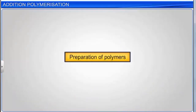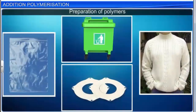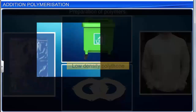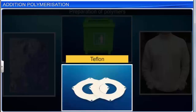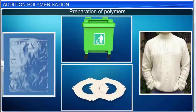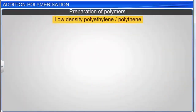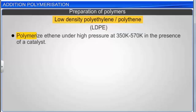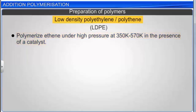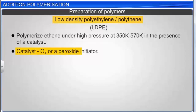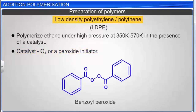Some important addition polymers are low-density polythene, high-density polythene, teflon, and polyacrylonitrile. Low-density polyethylene (LDPE) is obtained by polymerizing ethene under high pressure, in a temperature range of 350 to 570 Kelvin, in the presence of a catalyst—typically either oxygen or a peroxide initiator such as benzoyl peroxide.